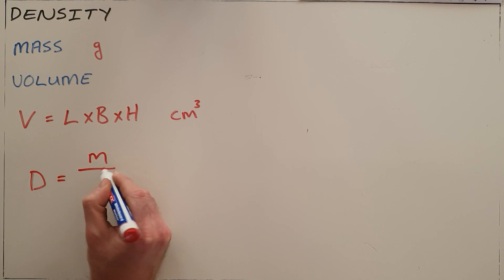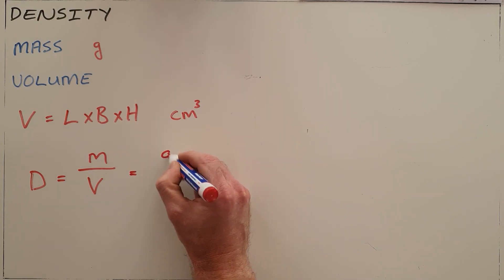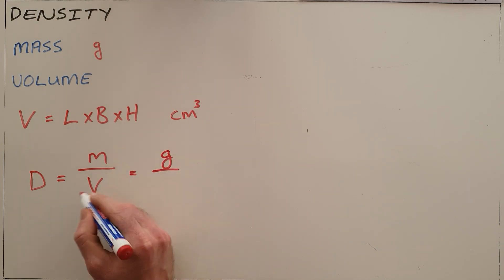Density is essentially the relationship between the mass of an object and the volume of that object. It basically tells us how much one specific volume of that object would weigh. Density is mass, which is measured in grams, over volume, which is measured in cubic centimeters.